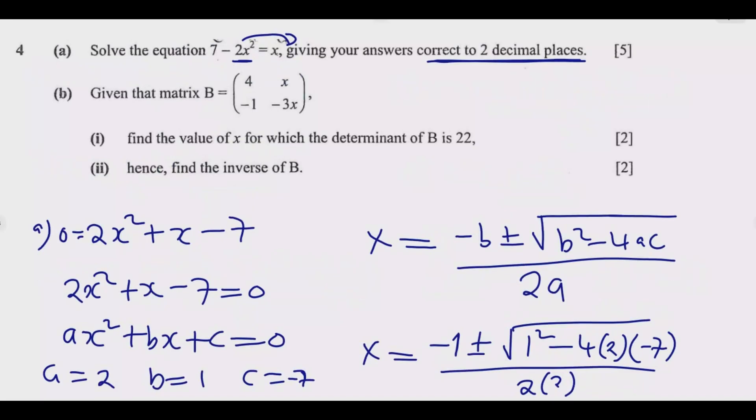So this is how you answer this question. Once you do this, you get these 5 marks. Then we can move to part b. Given that matrix B equals, in the first column we have 4, negative 1, then second column x and negative 3x, find the value of x for which the determinant of B is 22. If I have this matrix a, b, c, d, the determinant is ad minus bc.